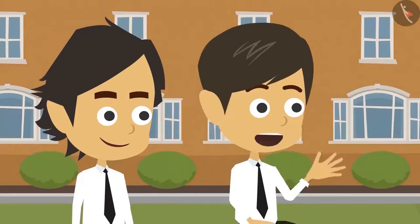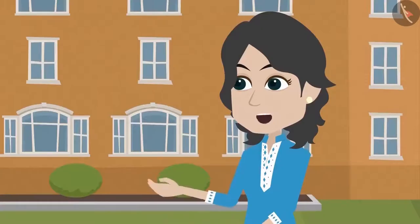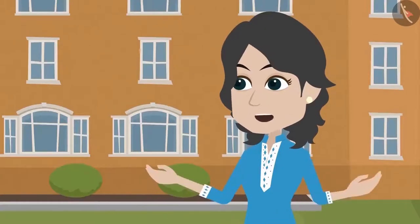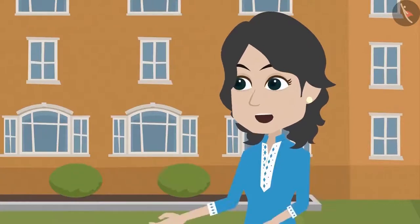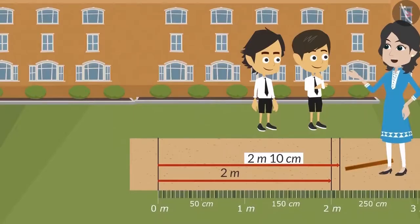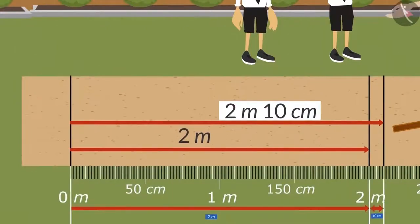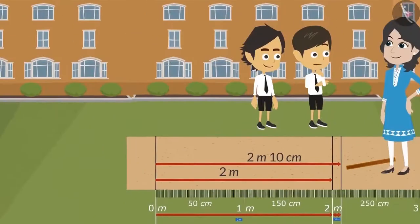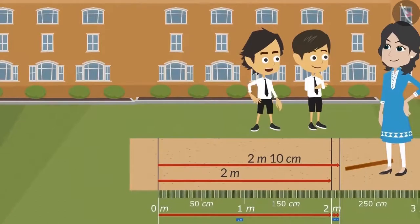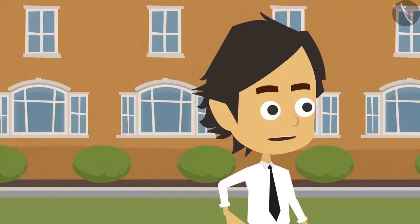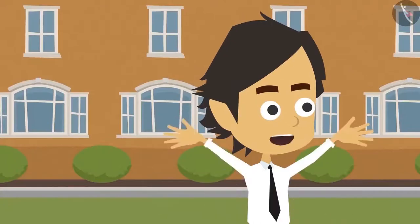I didn't understand, ma'am. Tell me either in meters or in centimeters. It is not necessary to tell length in just one unit of measurement. We can write it in two units of measurement as well. For instance, your long jump is 2 meters 10 centimeters — this means that you have jumped a length of 2 meters and 10 centimeters. Now I understand. Rayyansh has jumped just 10 centimeters more. So if I practice a little, then I will be able to jump longer.